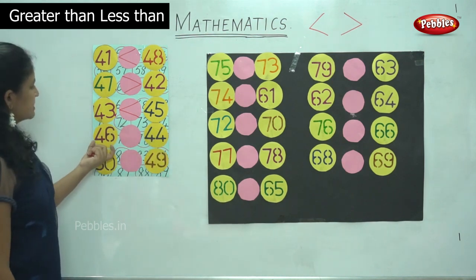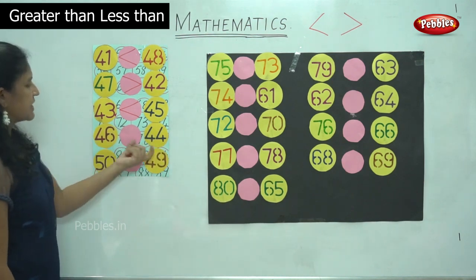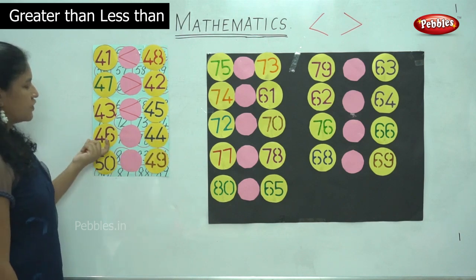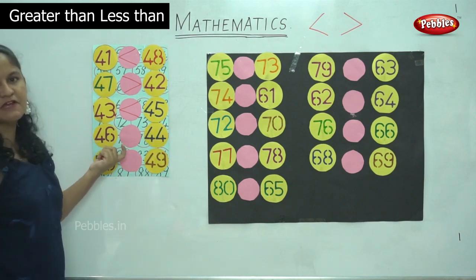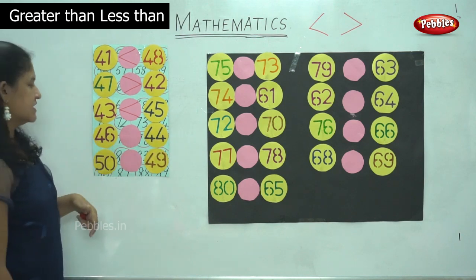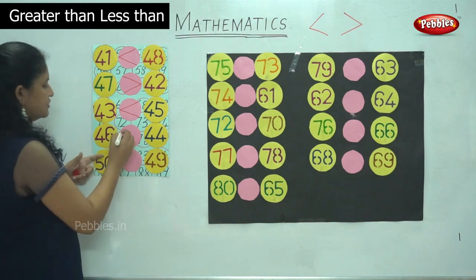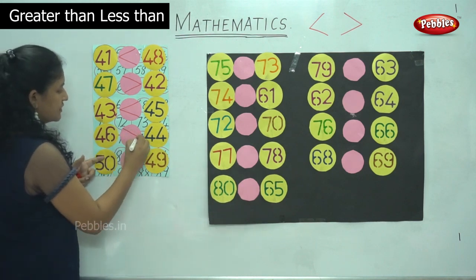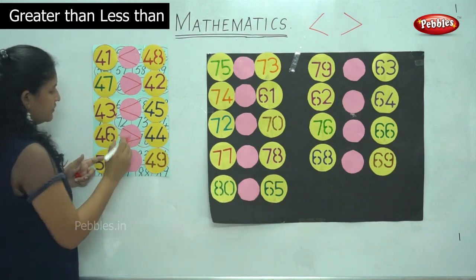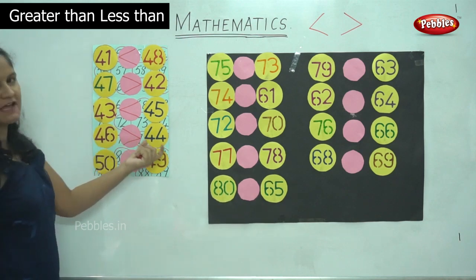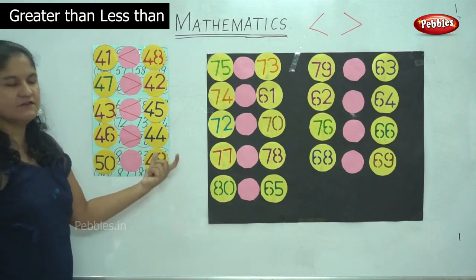The next is 46 and 44. So 46 is the bigger number or the greater number, so the mouth opens towards the greater number. We read it as 46 is greater than 44.